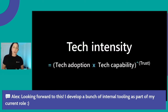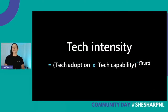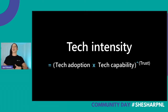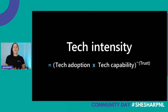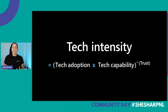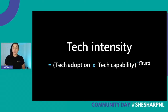Satya Nadella, our CEO, talked about technical intensity — a big topic at Microsoft. There's a formula: tech adoption times capability, then multiplied exponentially by trust. Microsoft has a phrase: 'Microsoft runs on trust.' If you trust your organization and your employees, it enables them to do better and do more. As engineers at Microsoft, we're highly encouraged to increase tech adoption, capability, and trust with our customers.